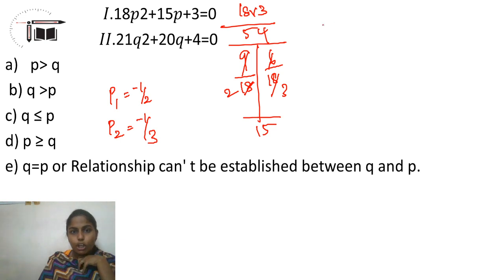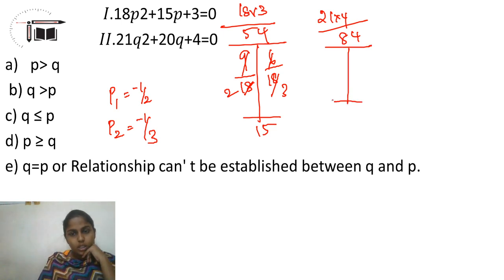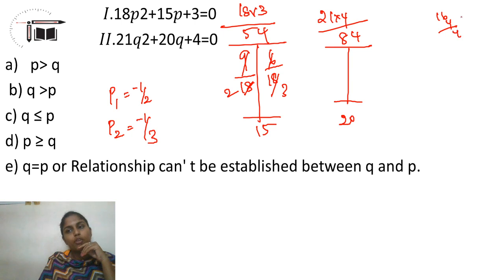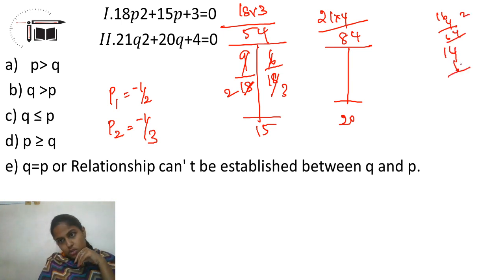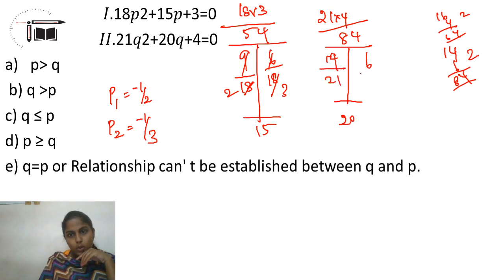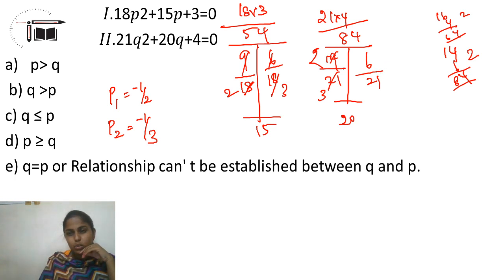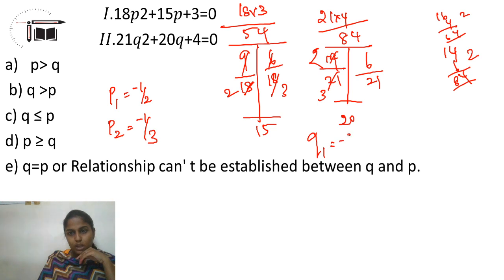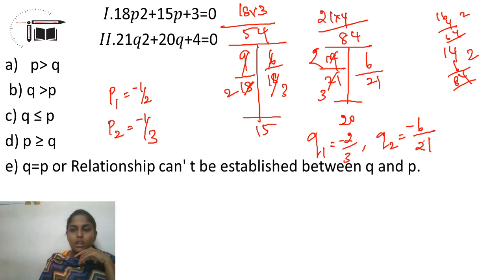21 into 4 is 84. Then add 20 — so 4 is 16 into 4, 16 into 4 is 24, 24 into 6 is 24. So 84, then 14 into 6. Divided by 21, divided by 21 — 7 table, cancel, cancel — approximately 0.23 something. Now we take this answer. Q1 is equal to minus 2 by 3. Q2 is equal to minus 6 by 21. Now we compare.